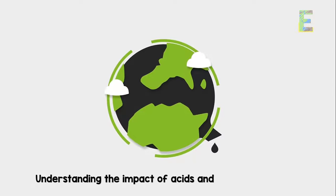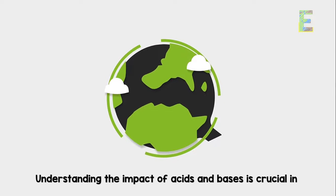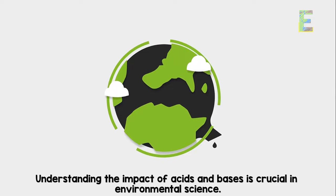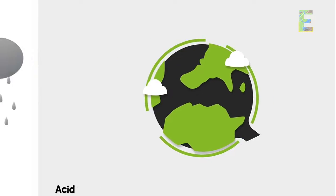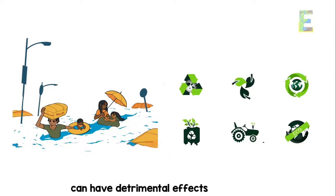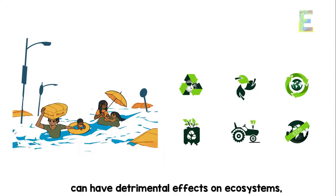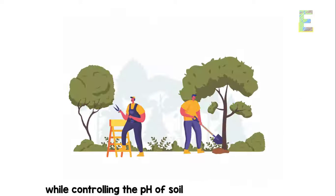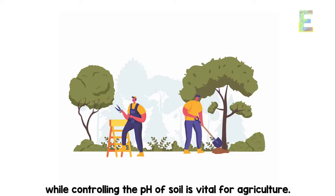Environmental impact. Understanding the impact of acids and bases is crucial in environmental science. Acid rain, which contains sulfuric and nitric acids, can have detrimental effects on ecosystems, while controlling the pH of soil is vital for agriculture.